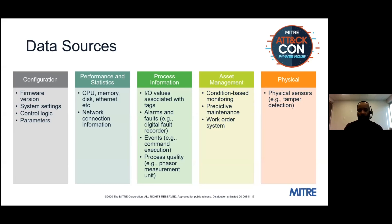Some things we're looking at include process information — events that can clue you in on command execution if you miss it over the network or need to corroborate what you see. Asset management is also very important: condition-based monitoring, predictive maintenance, how your equipment is running, and whether that links up with other events or work order databases. For example, a program download isn't necessarily bad, but did it happen when it was supposed to?